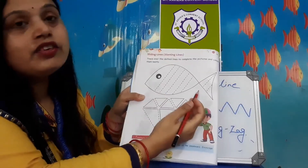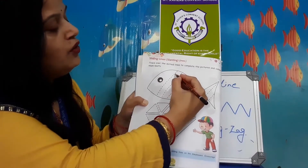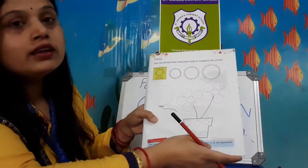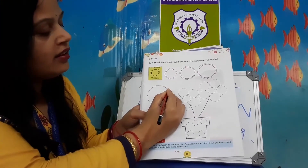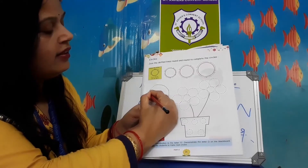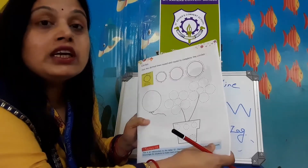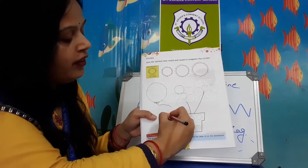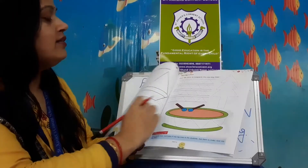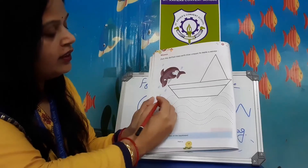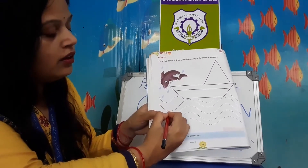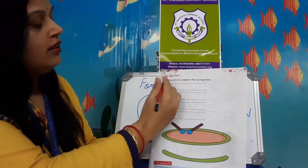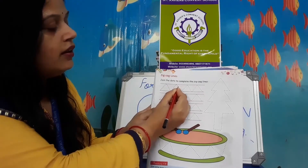Slanting line — look at this page, you have to trace it like a slanting line. Now next — circle. Look here, you have to trace it. But if you make a circle, you have to go anticlockwise, like this — anticlockwise, this side. Now next — curve. Look at this dot, you have to trace it like this. Next — zigzag, you have to trace it like this.